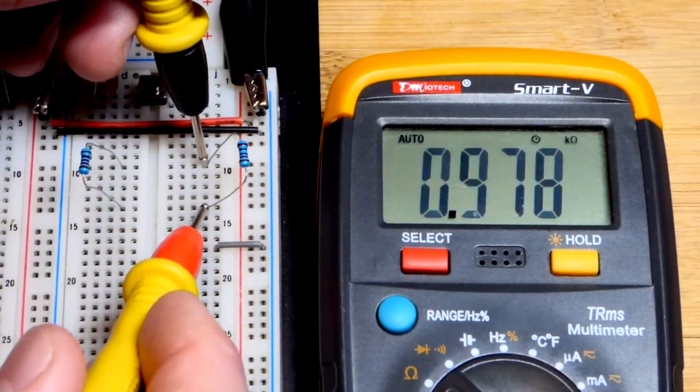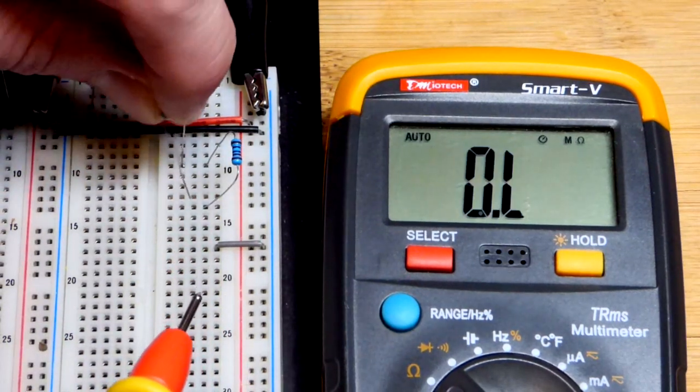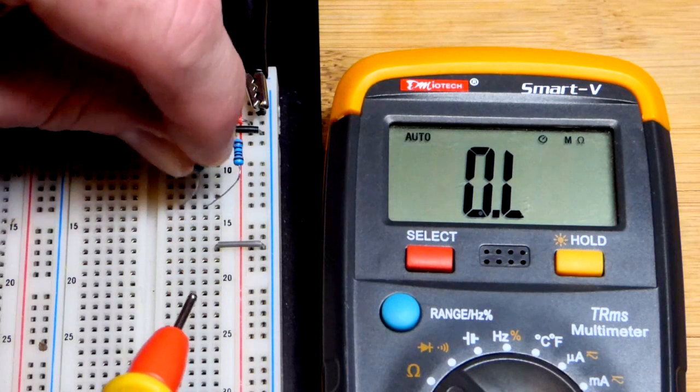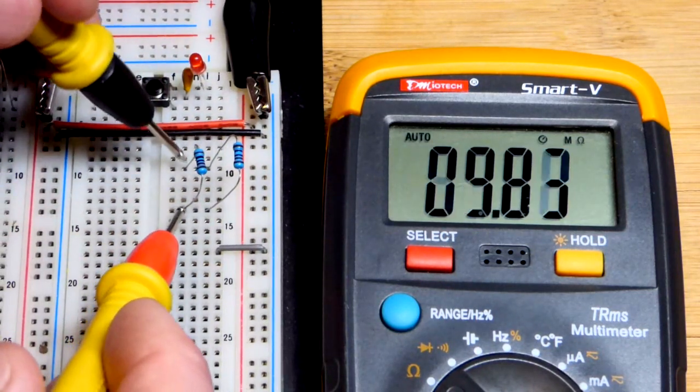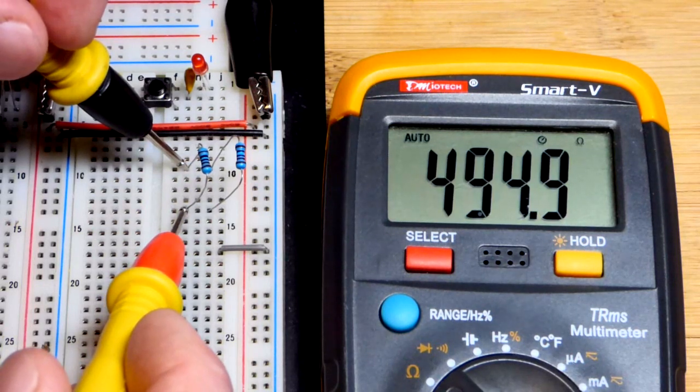This resistor is also just shy of 1 kiloohm, 1000 ohms. If I put them in parallel, put them to the same rows, we will see just shy of 500 ohms. And you see that right there.